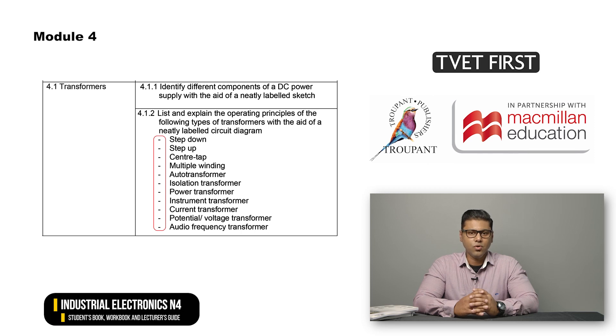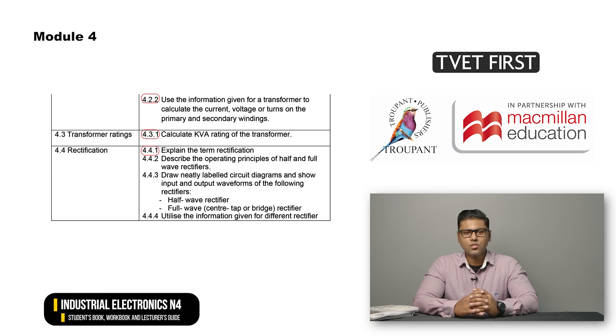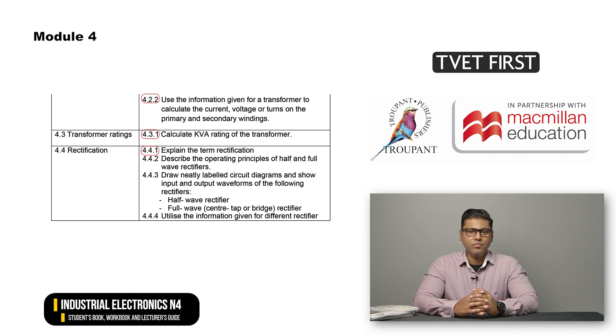Has any content been added to Module 4? Module 4 on power supplies now has much more detail. For example, 11 types of transformers are listed, and their operating principles must be explained through labelled circuit diagrams. Three transformer ratios are listed, which must be explained and calculated. Three new learning outcomes focus on calculating the current, voltage or turns on the primary and secondary windings, calculating the KVA rating of a transformer and explaining the term rectification.